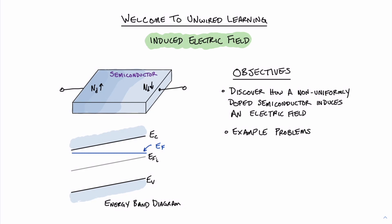Welcome to Unwired Learning. In this video, we're going to talk about the induced electric field in a semiconductor with a non-uniform distribution of carriers. In this picture, you can see that we have a distribution of carriers where the distribution is higher on the left and slowly goes lower to the right. The goals of this video are to discover how a non-uniform distribution, such as in this picture, produces an electric field, and to go over a few example problems. We will use these example problems to help us understand the consequences of this effect.